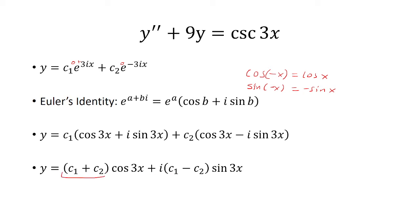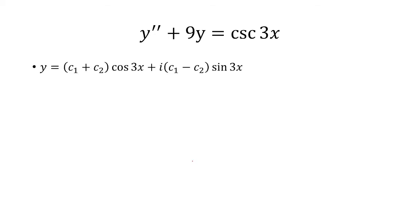c₁ and c₂ is just a constant, as well as i times c₁ minus c₂. So both of these are constants. And so we can just replace it with a new constant. Let's say c₁ for cosine 3x, and c₂ for sine 3x.